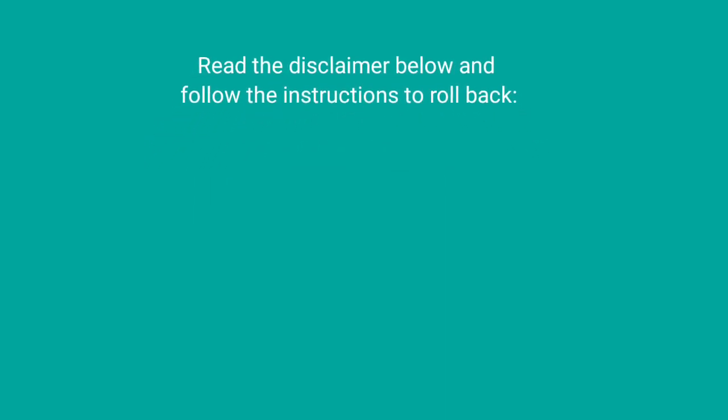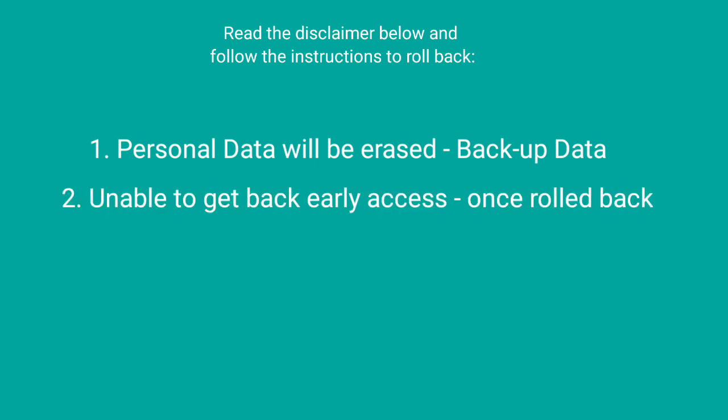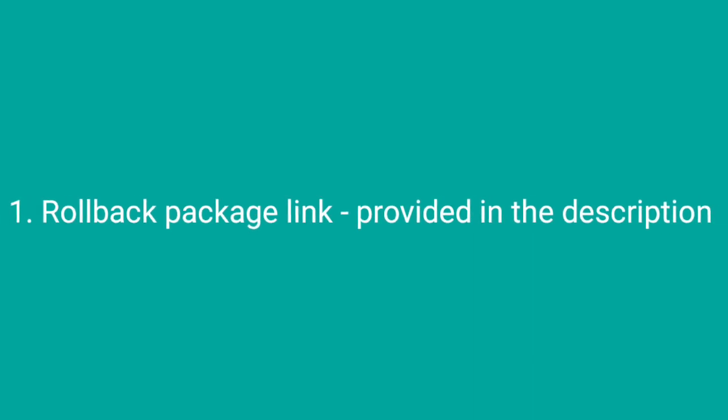Before you perform this operation, understand the disclaimer and follow the instructions correctly. First, your personal data will be erased when you roll back — please back up your data before the operation. You will not be able to get back to the early access version once you have rolled back. You will need to manually update to the latest Realme UI 3.0 based on Android 12 in case you lose some pre-installed applications.